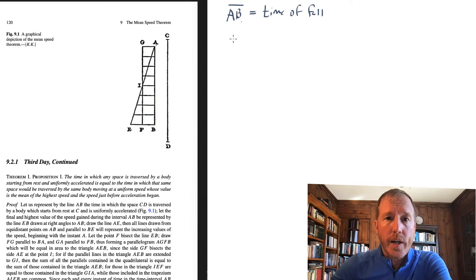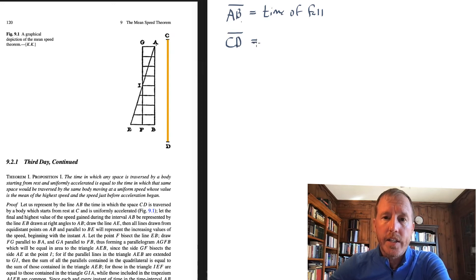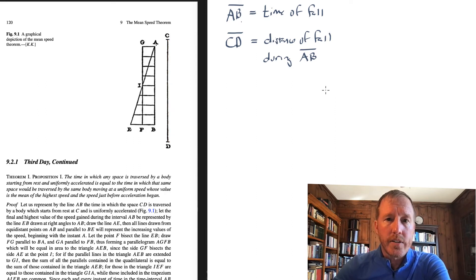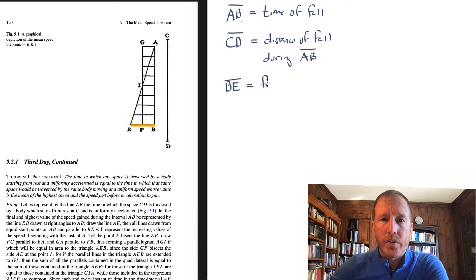And then he says CD — I'll draw another line segment — and the length of that line segment is an indication of the distance of fall during the time interval AB. That's what CD represents. And he also says, consider the line segment BE. The length of that line segment indicates the final speed at the end of time AB — that is, the speed that the object will have acquired after falling for a time given by the length of line segment AB.